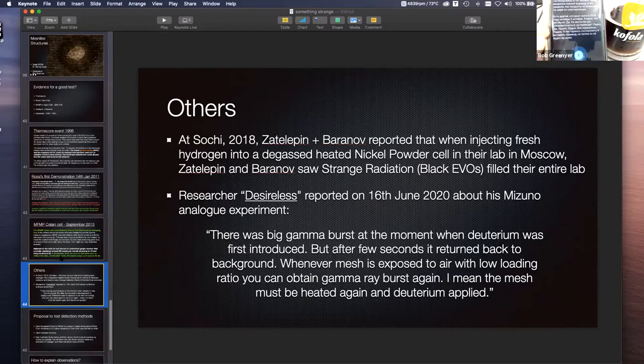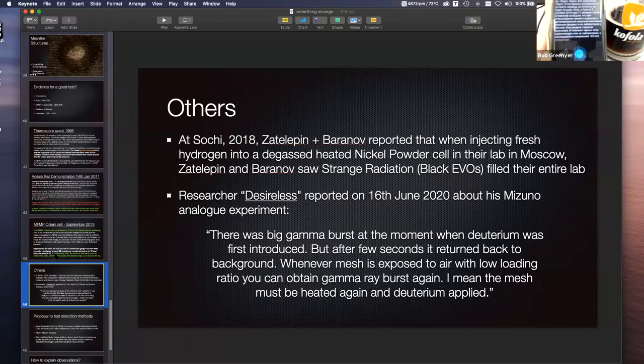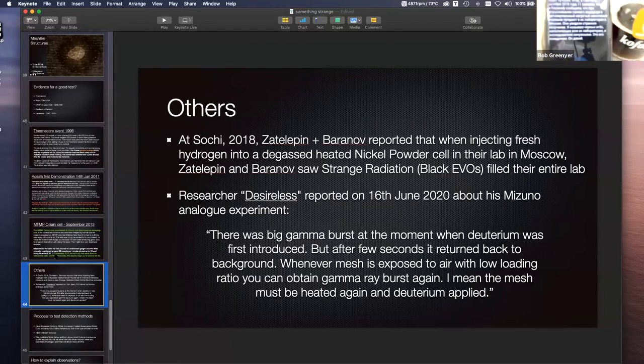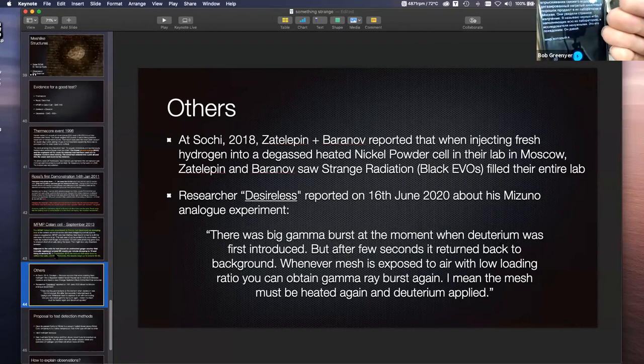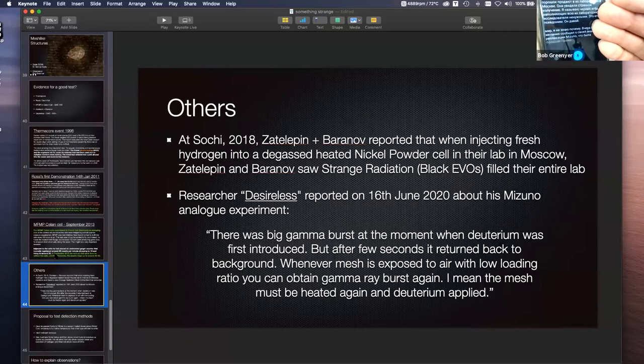At Sochi on October the 5th, 2018, Zatalepin said that he and Baranoff had reported that when injecting fresh hydrogen into a degassed, heated nickel powder cell in their lab in Moscow, they saw strange radiation, I call black evos, filling their entire lab. And researcher Desireless reported yesterday about his Mizuno analog replication, that there was a big gamma burst at the moment when the deuterium was first introduced. But after a few seconds, it returned back to background.